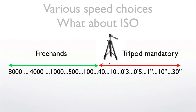What happens if you're shooting a landscape at F8 and the camera says it needs 1/30 or 1/20 of a second? You know that under 1/40 your photo won't be sharp. You could take out a tripod, but there's another solution — we get around that using what we call the ISO, which we'll cover in the next section.